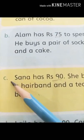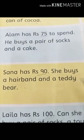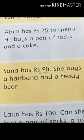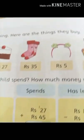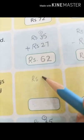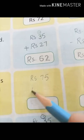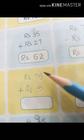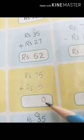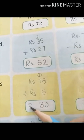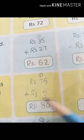In part C, Sana has 90 rupees and she buys a hairband and a teddy bear. Let's find the price of a hairband and a teddy bear. The price of the hairband is 5 rupees and the price of the teddy bear is 75 rupees. Adding: 5 plus 5 is 10, write 0 and carry 1 to the tens column; then 7 plus 1 is 8. So the total price of Sana's shopping is 80 rupees.